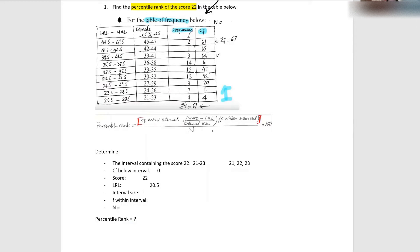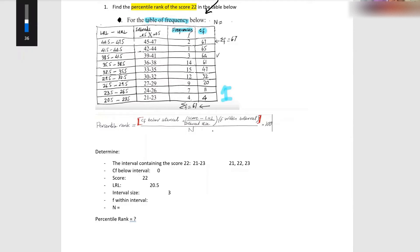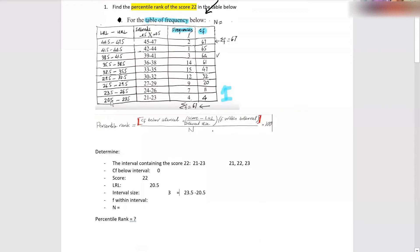Rihanna, can you tell me what is the interval size? Three. How did you find three? I subtracted the upper 23.5 and subtracted it from 20.5. Good — you take the upper limit minus the lower limit and that's how she got three.